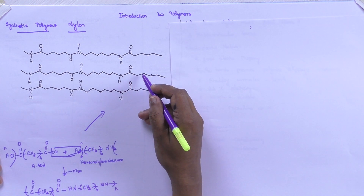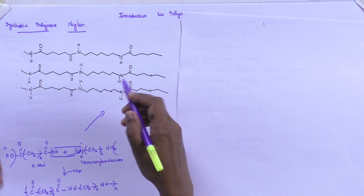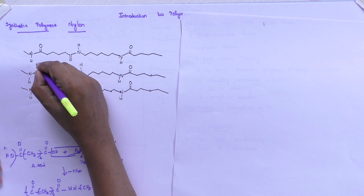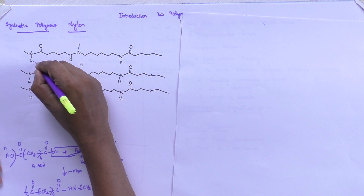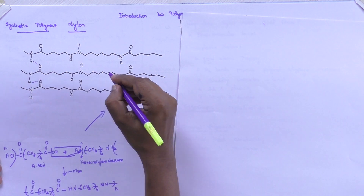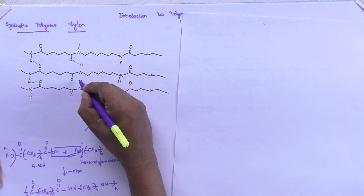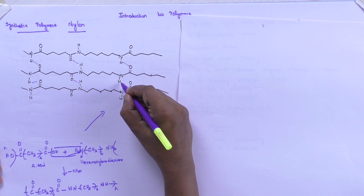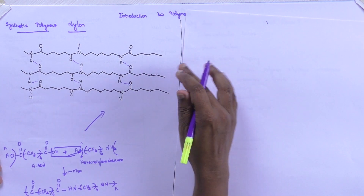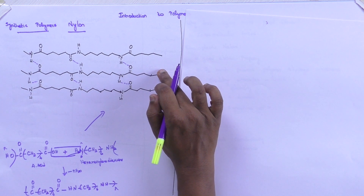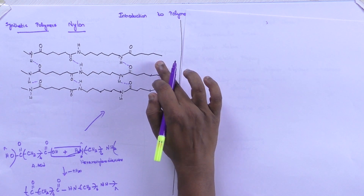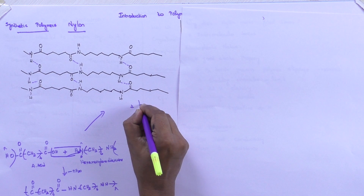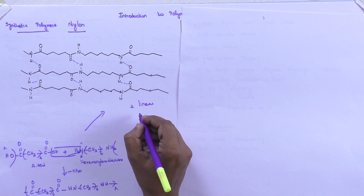You can see the structure that is depicted over here — the structure is directly depicted here — and this is nylon. Each linear chain is held together by means of weak forces of attraction. I am drawing the hydrogen bond here that is formed between two chains — two linear chains of polyamide. So if you see the properties, they are linear in nature.